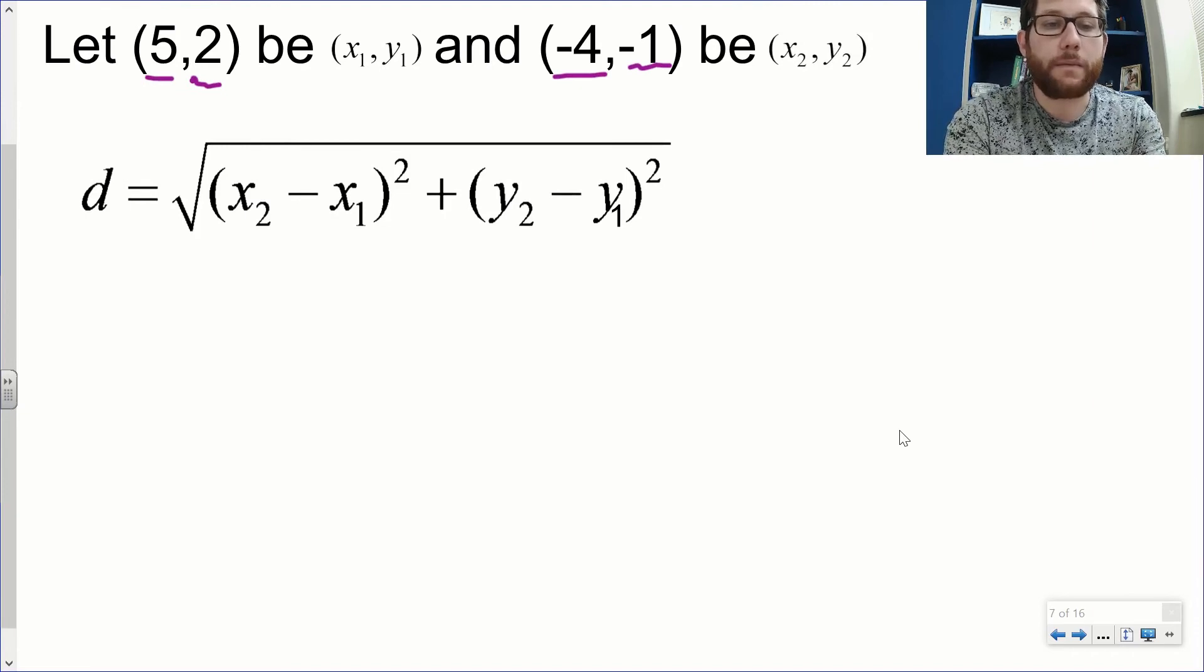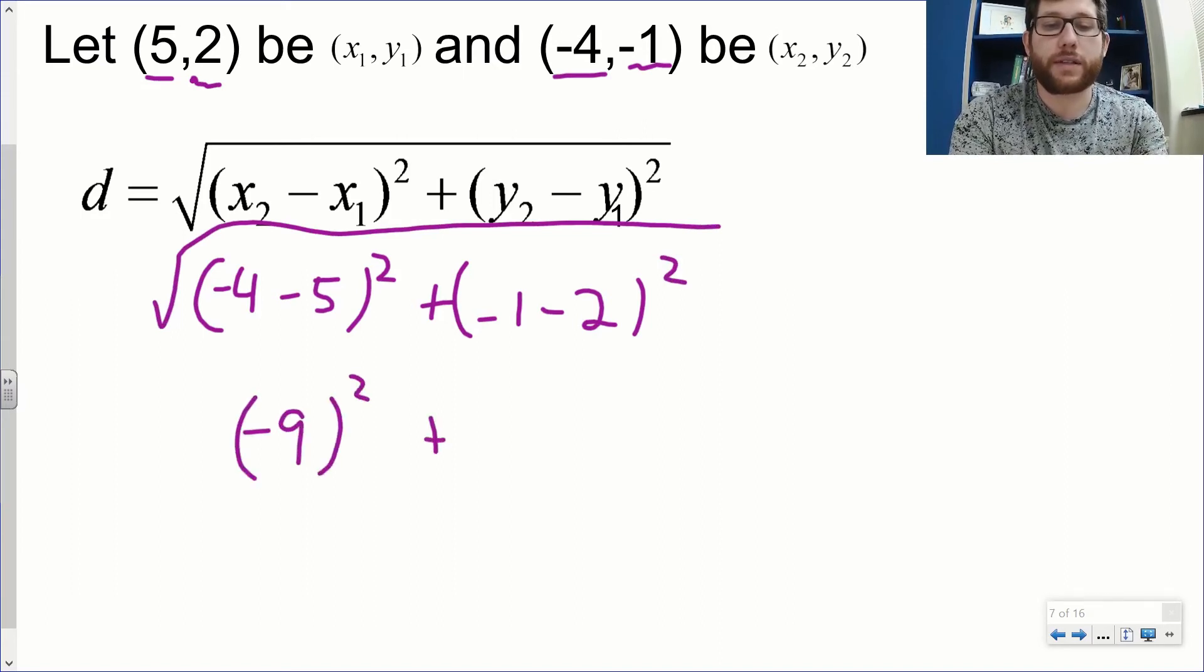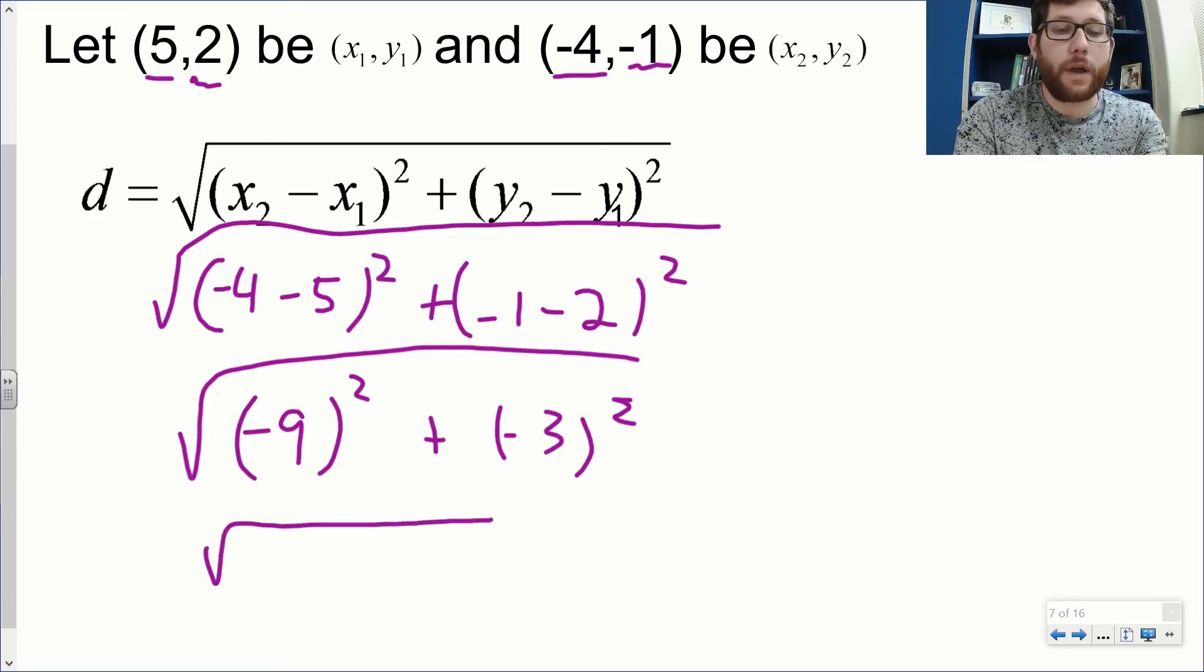Let's plug this in. My x₂ is -4 minus 5, and notice the negatives are built into the formula. Then my y₂ is -1 minus 2. I'm going to square that, and we'll have the square root over the whole thing. -4 minus 5 is -9 squared plus -3 squared. Instead of counting the distance on the graph, we subtracted -4 minus 5, finding the distance between -4 and 5 in terms of x's. So I've got -9 and -3. I square both of those, getting 81 + 9, and I get √90.